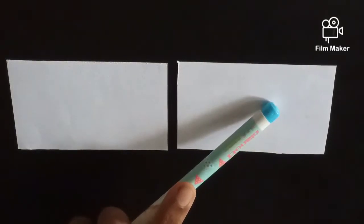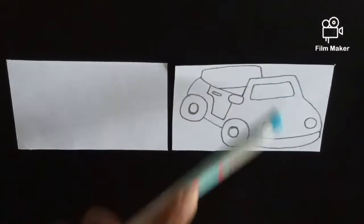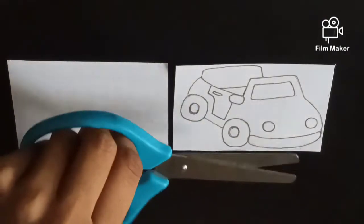First, take two papers and draw a car on one of them. Cut it along the outline.